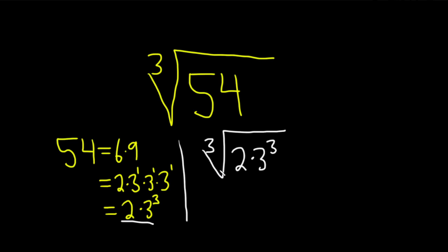So now you just break it up into two roots. So it's just the product of the roots. The cube root of 2 times the cube root of 3 cubed.